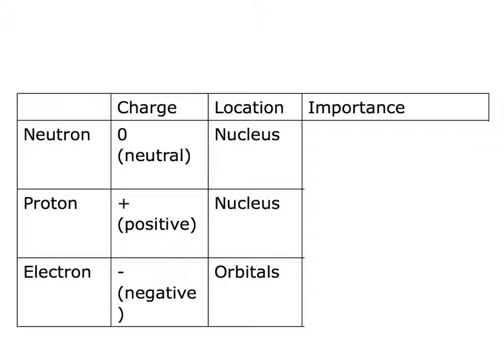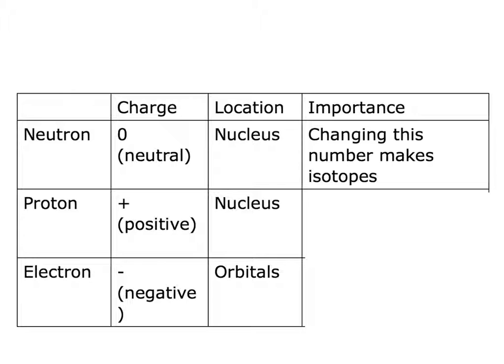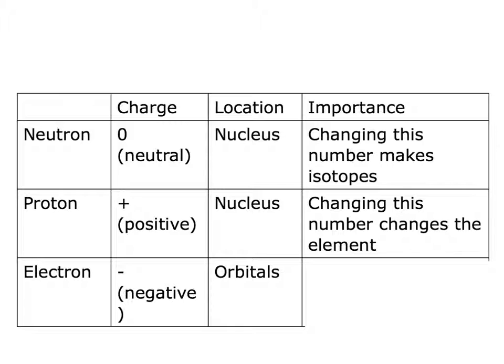The number of each of these subatomic particles is important in the atom. If you change the number of neutrons, you can create different isotopes. If you change the number of protons, you're actually going to change which element we are talking about. Electrons in their orbitals are important because they are involved in bonding.